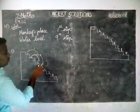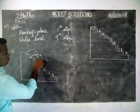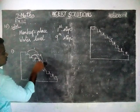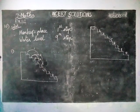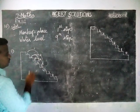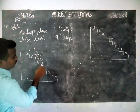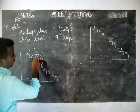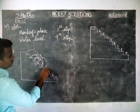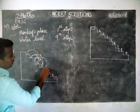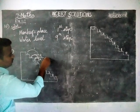Again it is jumping back two steps. This is the fourth jump. Then again three steps — one, two, three. It is jumping to number six. This is the fifth jump.